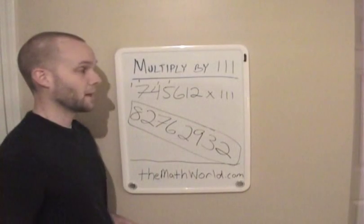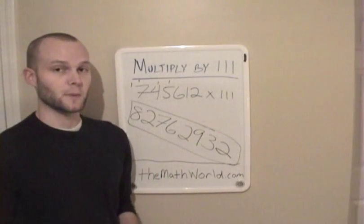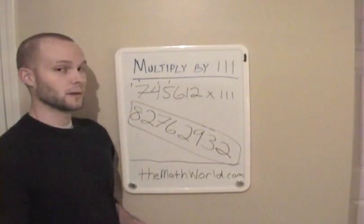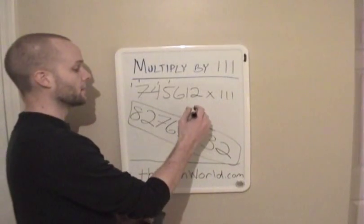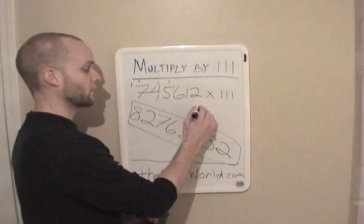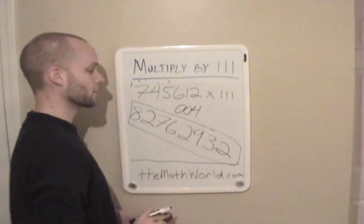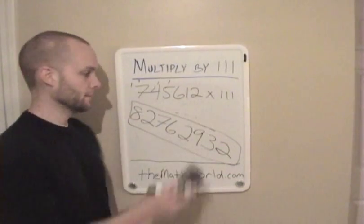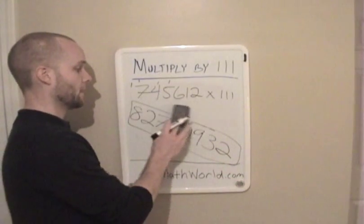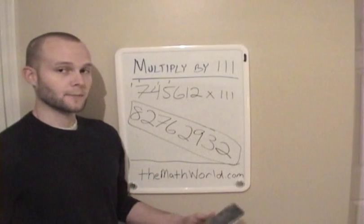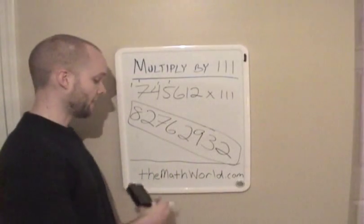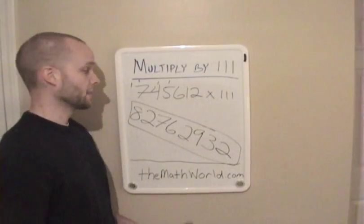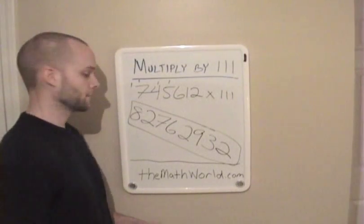So this is how you multiply numbers by 111. Keep in mind to always make sure it's treated as a three-digit number — so even if it's 4, pretend like it's 004. If it's already a three-digit number, you don't have to worry about it. If you guys haven't already, please subscribe to the channel, and check out the website at TheMathWorld.com. Thanks for watching — I'll see you guys next video.